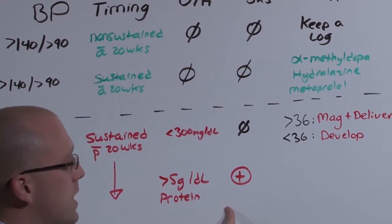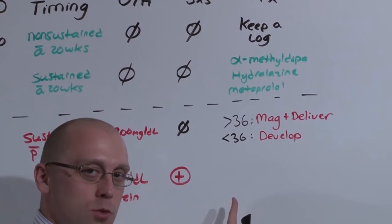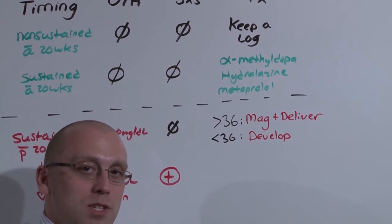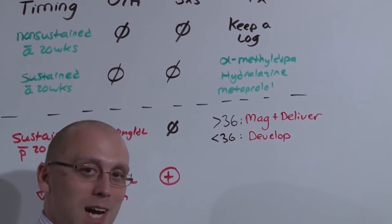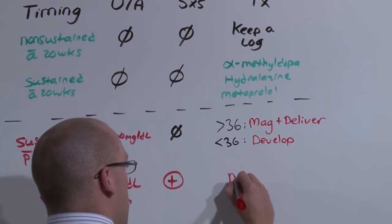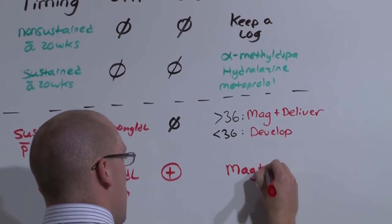At this point, it does not matter what's happening to baby. Baby doesn't matter. Mom is about to seize. Mom is about to die. So you have to get baby out. You're going to give her magnesium to prevent seizures, and you're going to deliver, often by C-section.